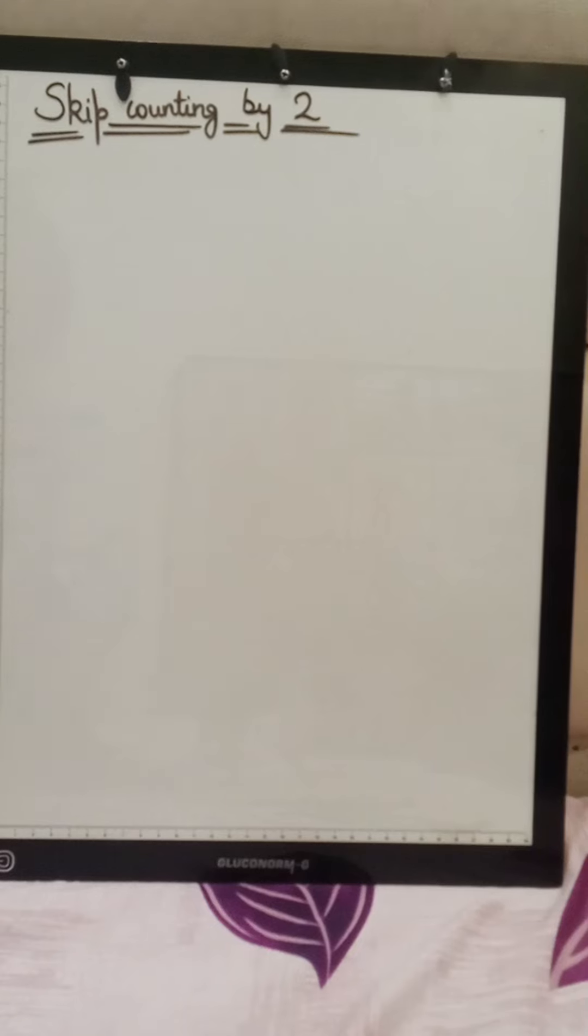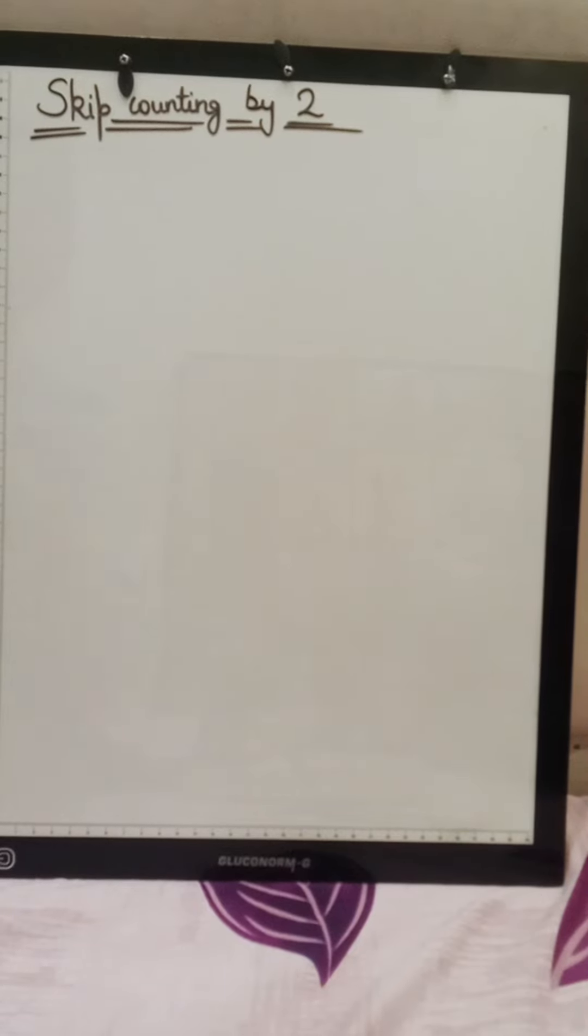Now, I have told you what skip counting is, basically what happens. Skip counting is a table of one application. So we are seeing skip counting by 2, which will basically become a table.